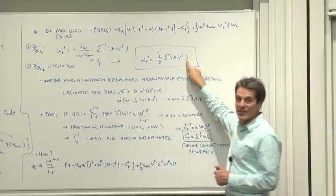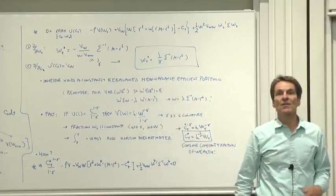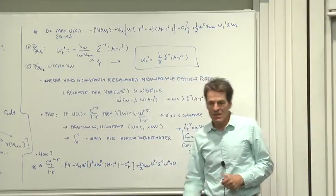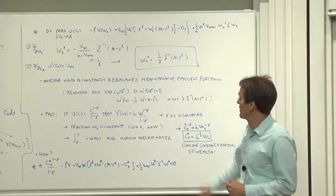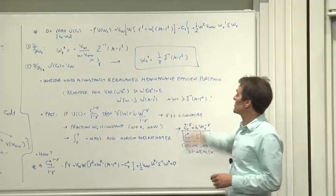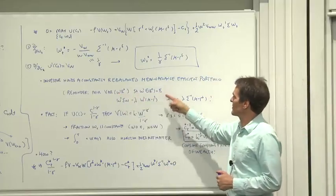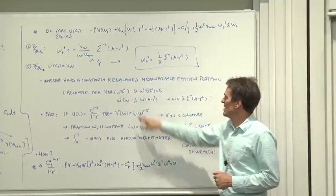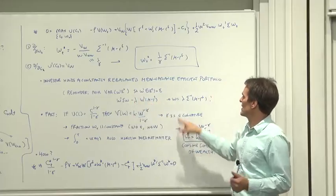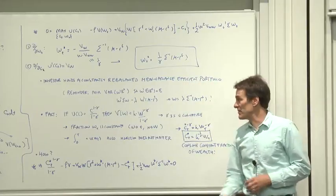So what does all this tell us? Let's look at the portfolio weights. This investor holds a constantly rebalanced mean variance efficient portfolio. We've derived mean variance efficiency. That's been sitting on our agenda for a long time. We talked about mean variance efficiency. We didn't say who would want to hold the mean variance efficient portfolio. Now we know who wants to hold a mean variance efficient portfolio. As a reminder, in case you don't see that formula and say, oh yes, that's a mean variance efficient portfolio. If you want to derive the mean variance efficient portfolio, minimize variance for a given mean, that's W prime sigma W. That's a Lagrange multiplier. That's the mean of the portfolio. The answer is that the weights are proportional to sigma inverse mu. It's a mean variance efficient portfolio.